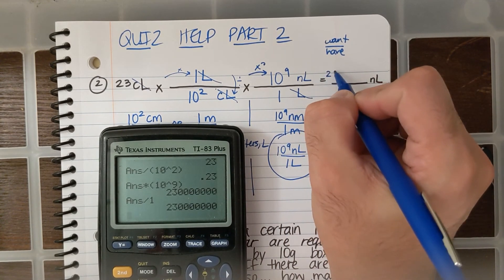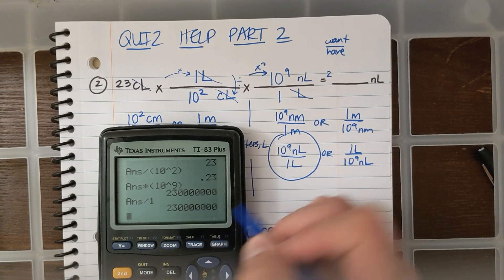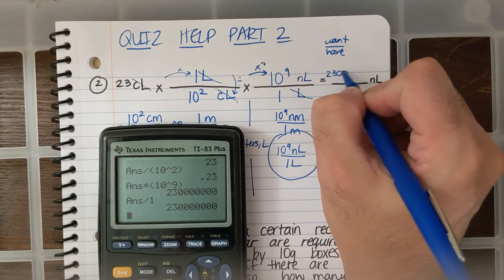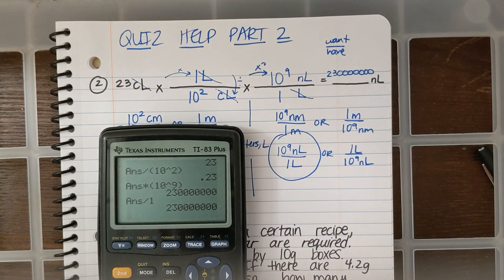And I get this huge number. I'm going to put all those zeros there, and then I'll put it in scientific notation. I have 1, 2, 3, 4, 5, 6, 7. So, 1, 2, 3, 4, 5, 6, 7 nanoliters.